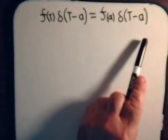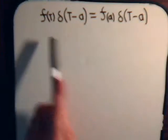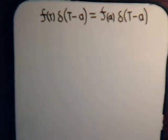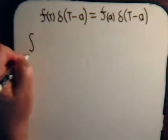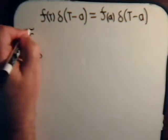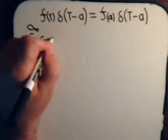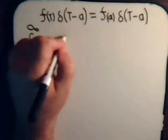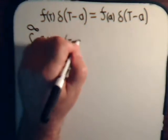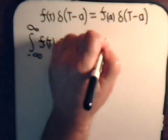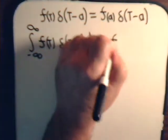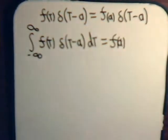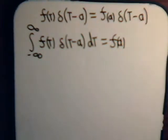In this video we want to prove this equation. This is another fundamental property of the Dirac delta function. In the previous videos dealing with the Dirac delta function we derived this equation, which just equals f. We established that several videos ago.